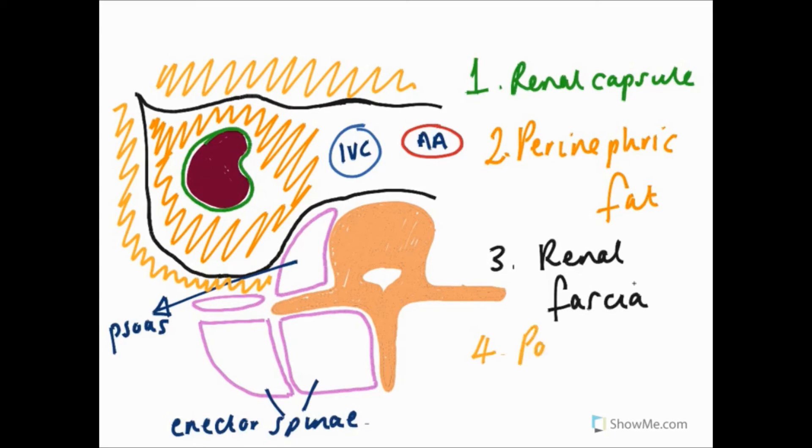Another layer can also be found on the posterior abdominal wall and this is called the paranephric fat.